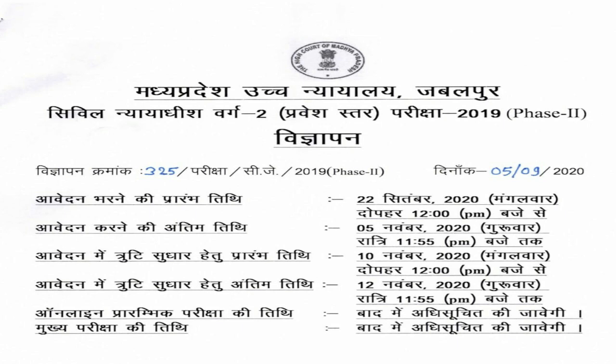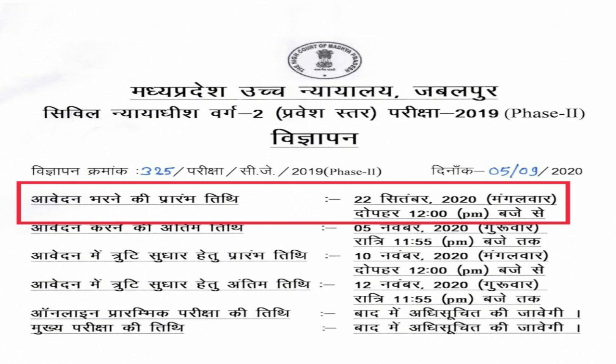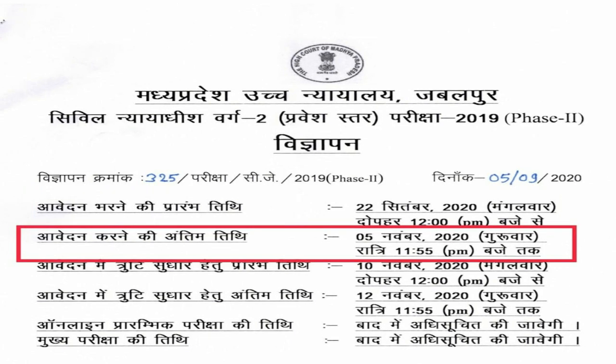So let's start by reading the first thing in the notification, which tells us the starting date of the application. The starting date of our application is 22 September 2020, Tuesday, at 12 o'clock. The ending date is 5th November 2020, which is Thursday, and at 11:15 you can fill this form.